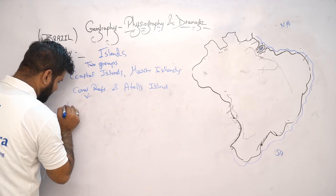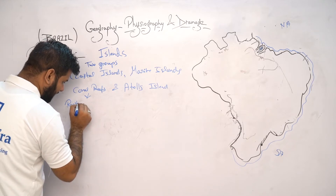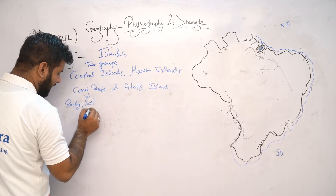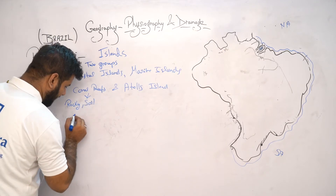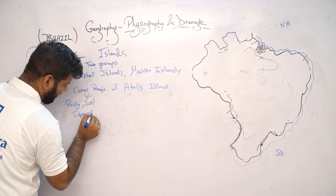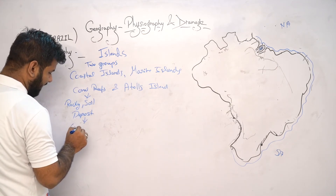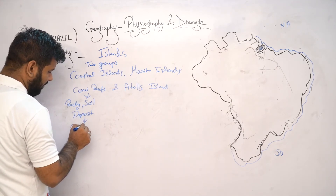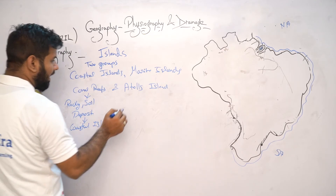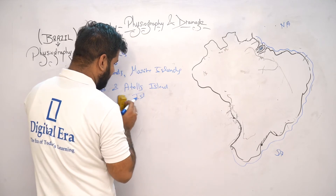Jab rivers ke saath mein soil aur rock pani ke saath mein bahte hain, to yeh ek jagah par jaake deposit ho jaate hain. Phir wahan par jo land banta hai usko coastal islands bolte hain.